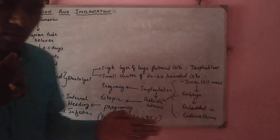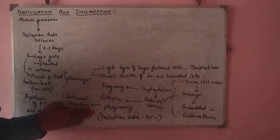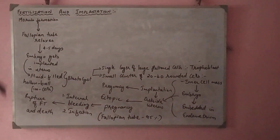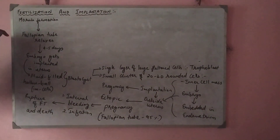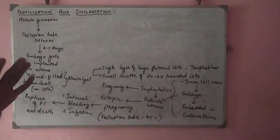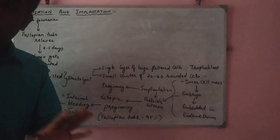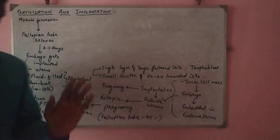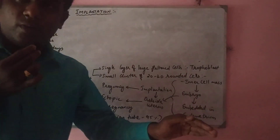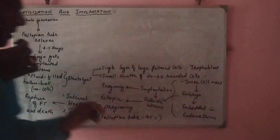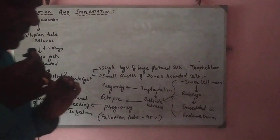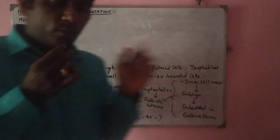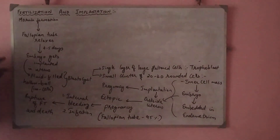From morula formation, it takes around 4 to 5 days for the morula to pass through the fallopian tube. It passes through the fallopian tube and finally lands into the uterus, where it gets embedded in the wall of the uterus. This whole process takes around 4 to 5 days.